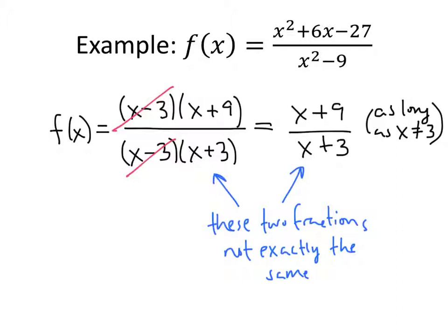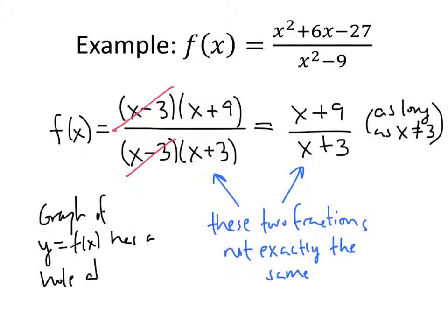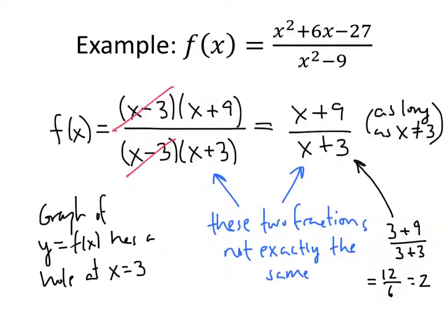In fact, what we have at x equals 3 is a hole. The graph of y equals f of x will have a hole at x equals 3, not an asymptote. The y-coordinate of that hole — we can tell from the table it's y equals 2. We can also verify by plugging 3 into the simplified fraction: 3 plus 9 divided by 3 plus 3 equals 12 over 6, which is 2. That's why those table values were getting closer and closer to 2.